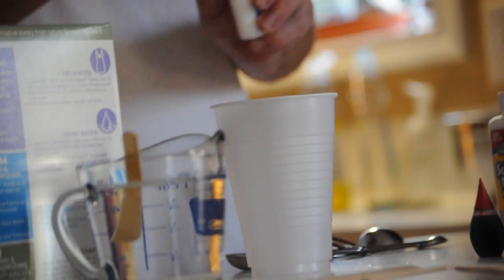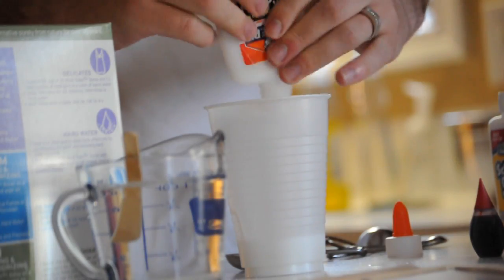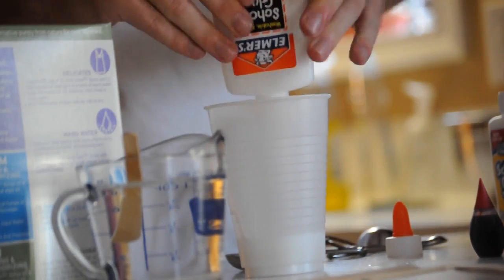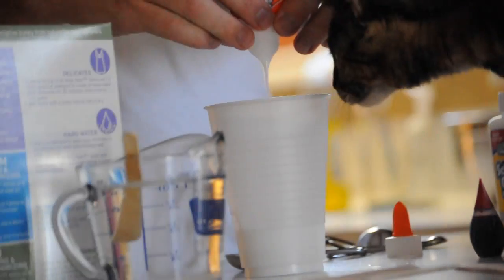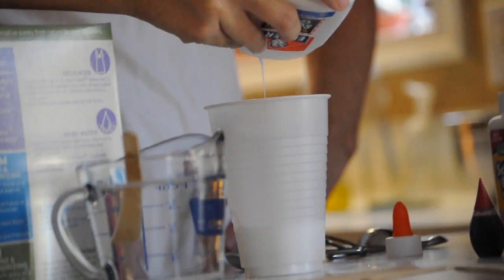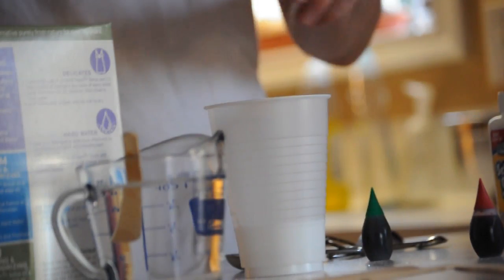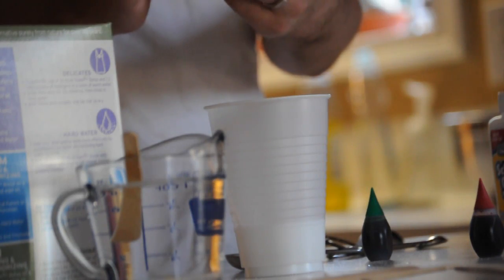So now we're going to take our glue, pour all of it into our cup. Get all four ounces in there. Then we're going to take our food coloring and add that to the glue. We're doing two drops of yellow and two drops of green.